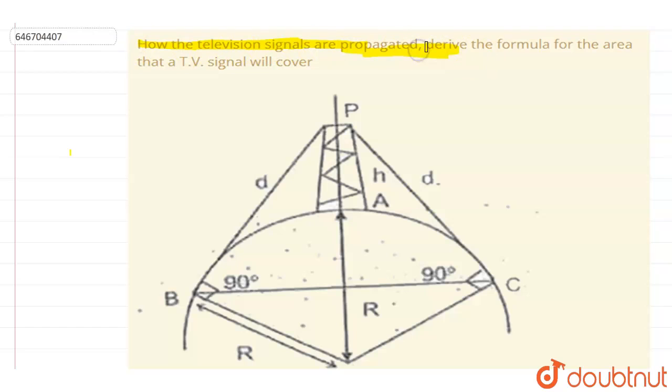So if you see here, this distance is d, right? From the tower to this point it is d. So if I write down the area that will be covered through it, it will be simply πd².